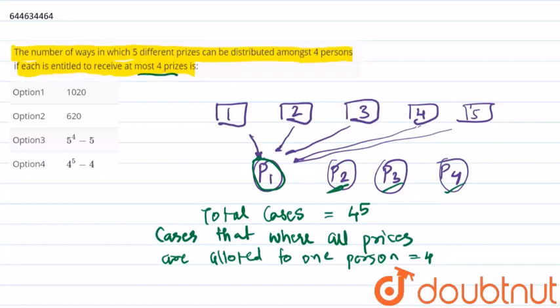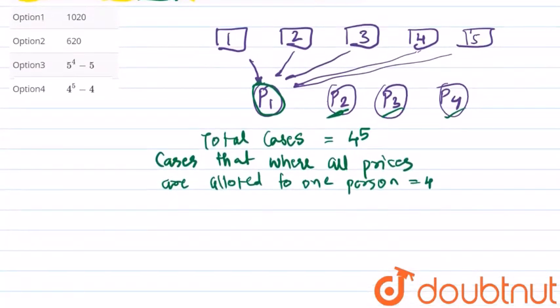And we have been told that each should receive at most four prizes. So from this we would now find that number of ways these prizes would be distributed is 4 raised to 5 minus 4, which we need to subtract as everyone can get at most four prizes.